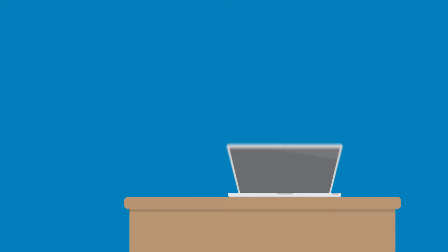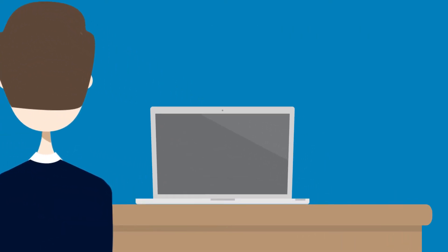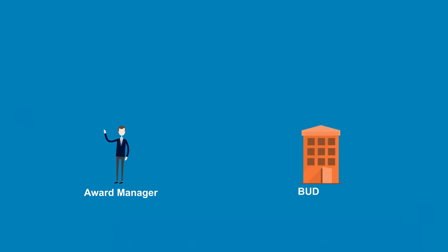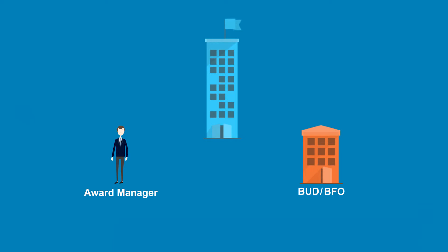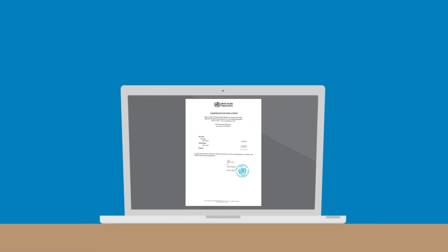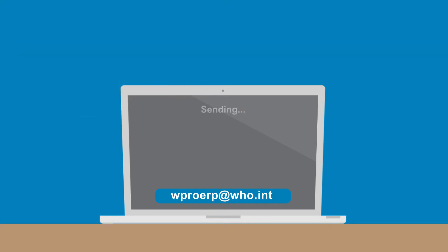First, the award manager makes a request for a certified financial report by completing the FCFS request form and sending it to BUD. This is then reviewed by BUD, endorsed by BFO, and forwarded by the award manager to the awards team in HQ. Upon receipt from HQ, the awards manager submits the FCFS with a copy to ERP for uploading into the Enterprise Content Management System, or ECM.